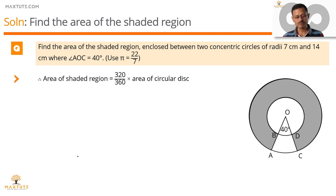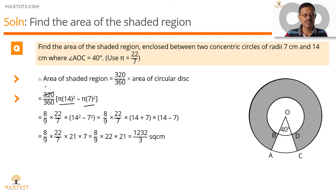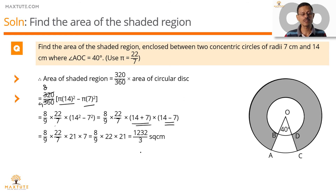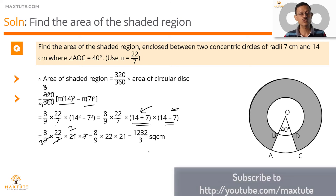To quickly sum it up: the area of the shaded region is 320 by 360 into the area of the circular disk, which is pi into 14 squared minus pi into 7 squared. This simplifies to 8 by 9. So we have 8 by 9 into 22 by 7 into a squared minus b squared, which is a plus b into a minus b. This gives 8 by 9 into 22 by 7 into 21 into 7. The 7 cancels, and the final answer is 1232 by 3 square centimeters.